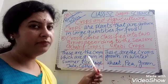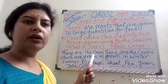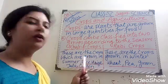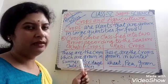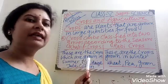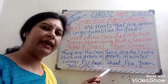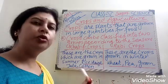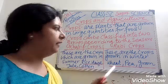Kharif crops are the crops which are grown in the summer season. Examples are rice, maize, jute, cotton, barley, etc.